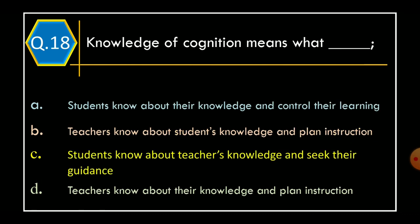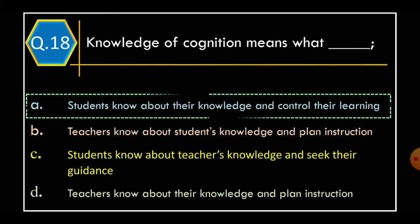Question 18: Knowledge of cognitive means what? Option A: Students know about their knowledge and control their learning; Option B: Teachers know about students' knowledge and plan instruction; Option C: Students know about teachers' knowledge and seek their guidance; Option D: Teachers know about their knowledge and plan instruction. The correct option is Option A: Students know about their knowledge and control their learning.